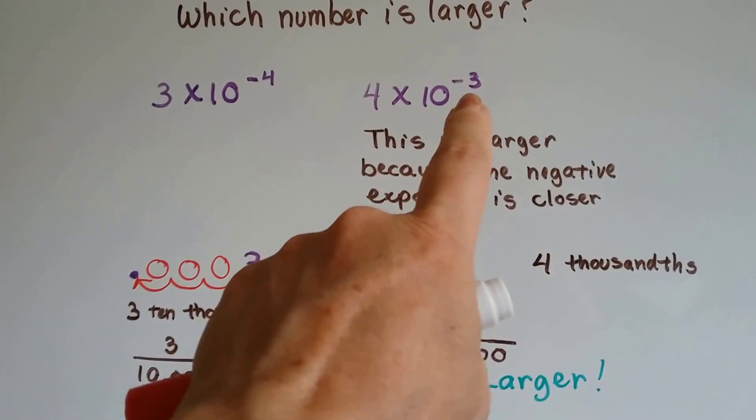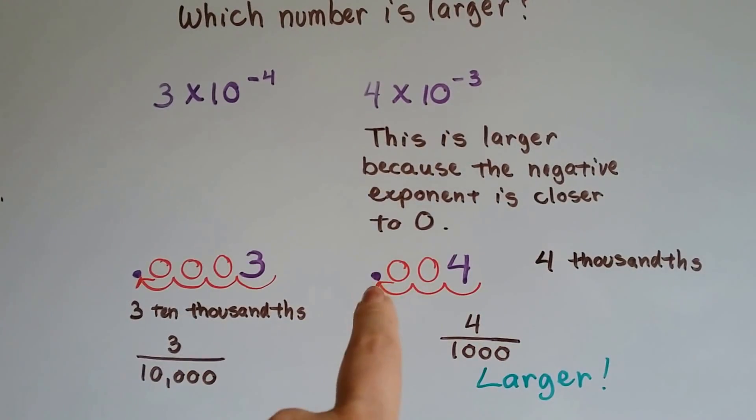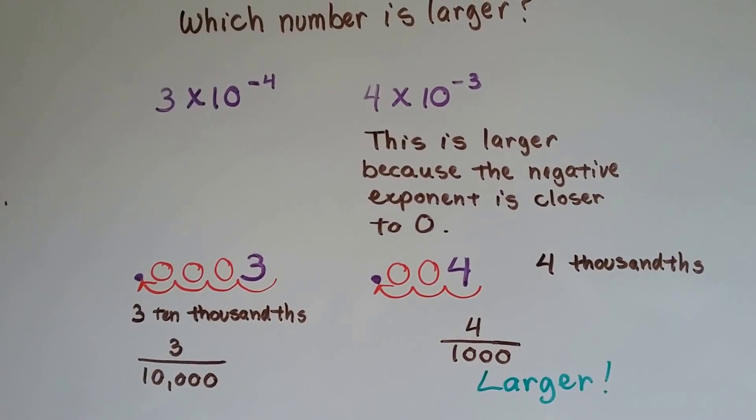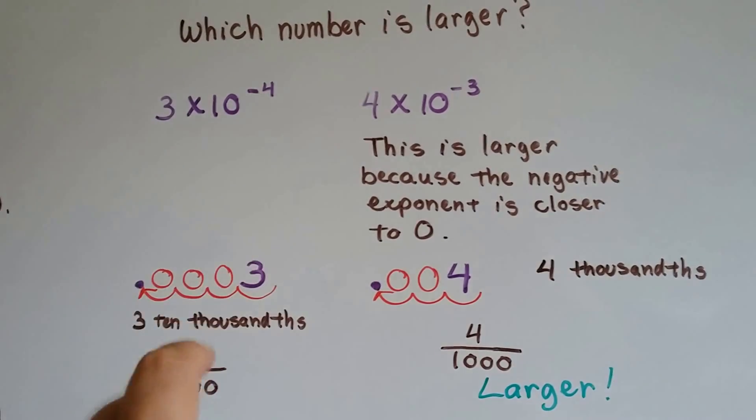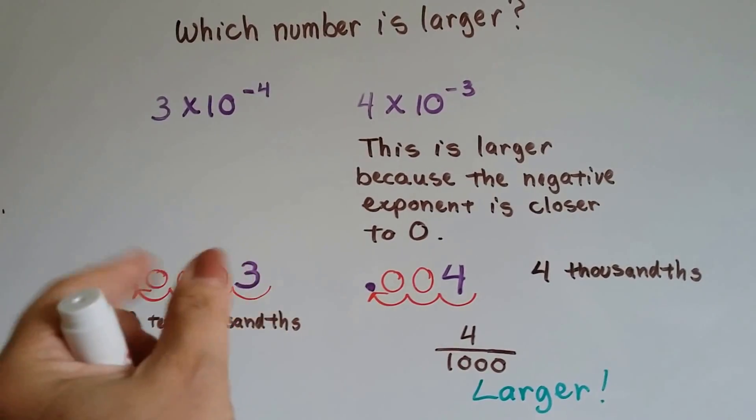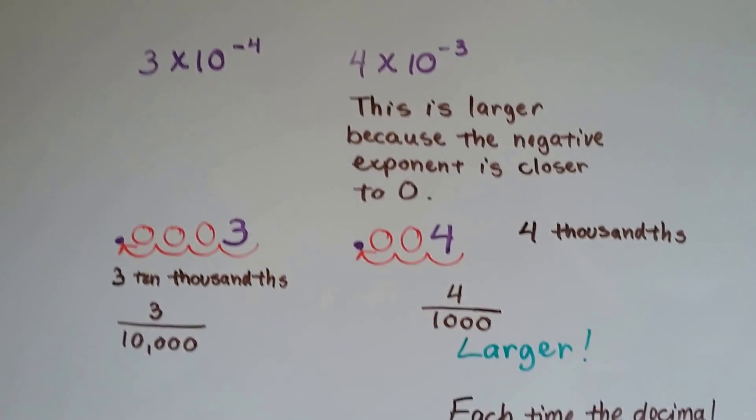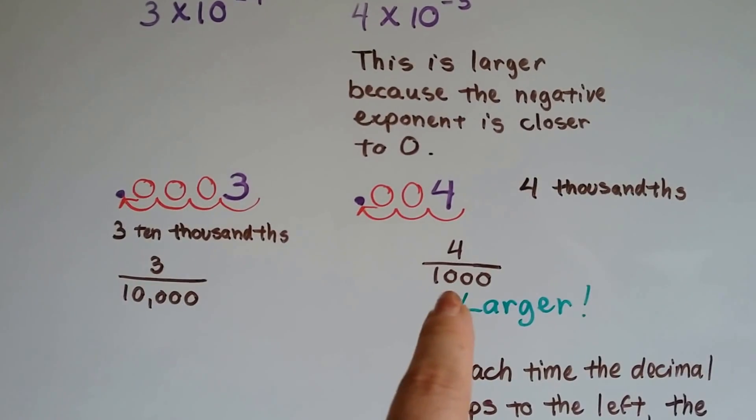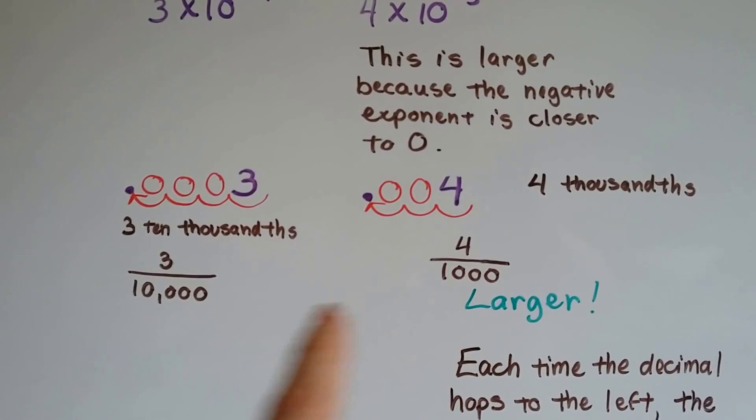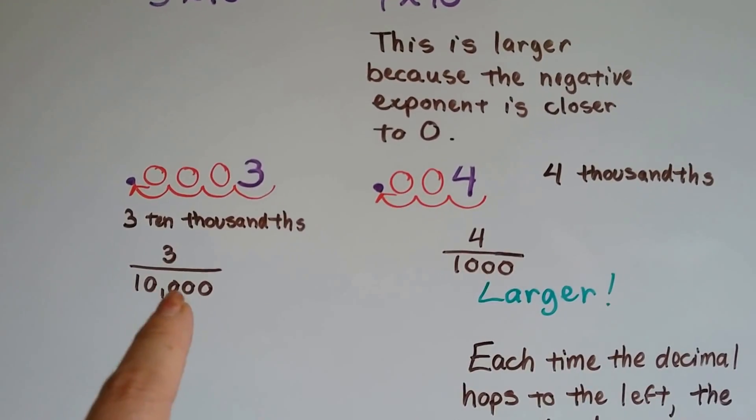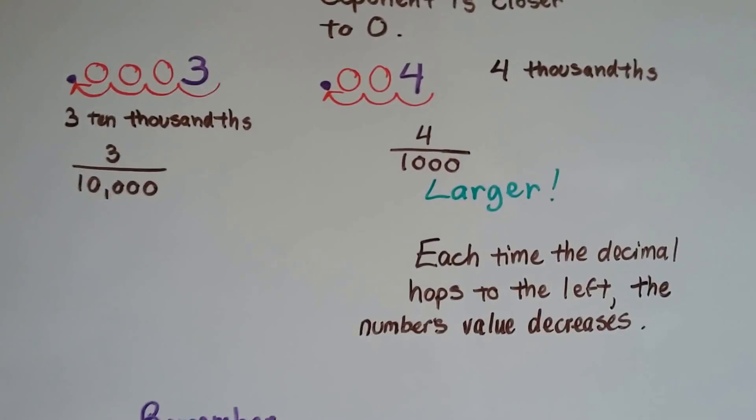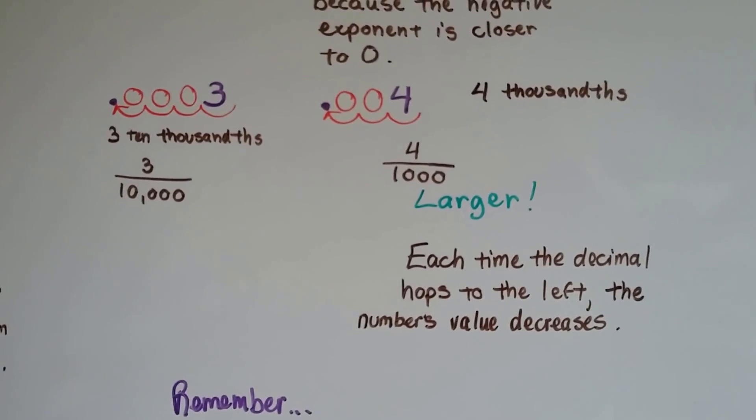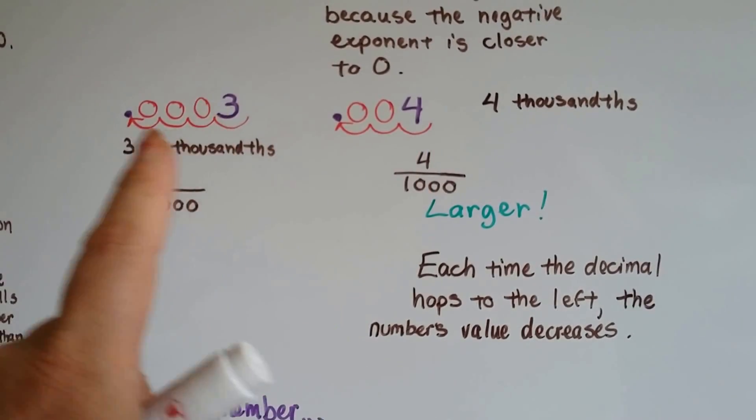So if it's a smaller negative number, that means it's closer to the decimal point. If it's a larger negative number, that means there's more zeros in between the number and the decimal point. So we know this one's larger—it's 4 thousandths, 4 one-thousandths—and this is 3 ten-thousandths. That's much smaller. Each time the decimal hops to the left, the number's values decrease.